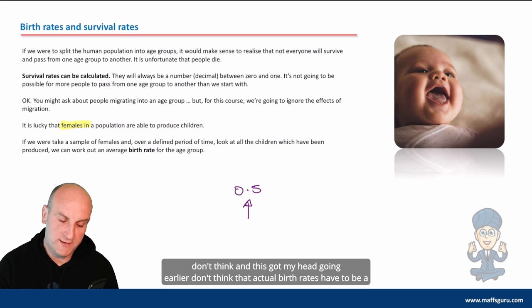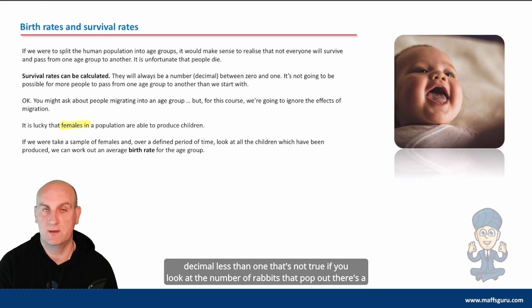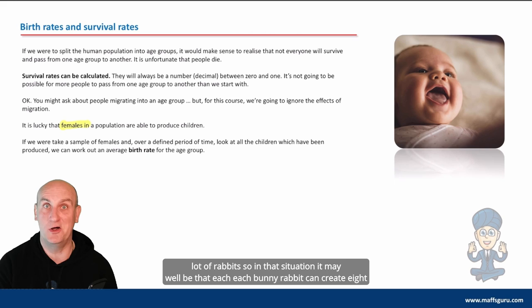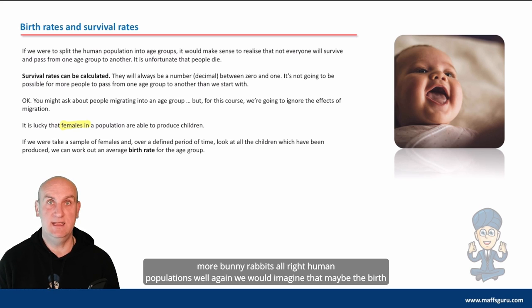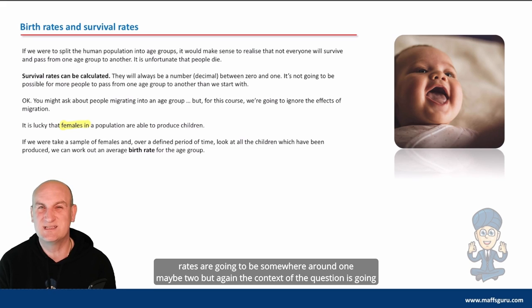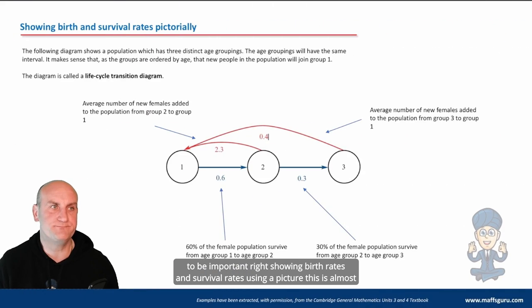Now, don't think, and this got my head going earlier, don't think that actual birth rates have to be a decimal less than one. That's not true. If you look at the number of rabbits that pop out, there's a lot of rabbits. So in that situation, it may well be that each bunny rabbit can create eight more bunny rabbits. Human populations, well, we would imagine that maybe the birth rates are going to be somewhere around one, maybe two, but the context of the question is going to be important.